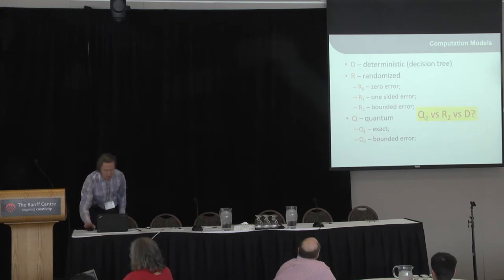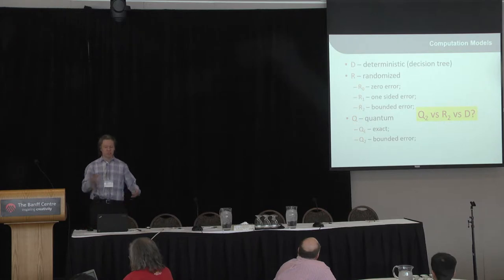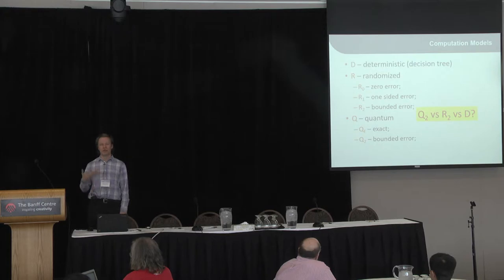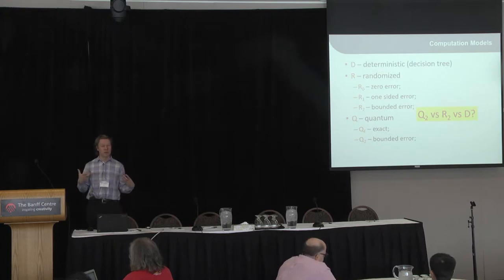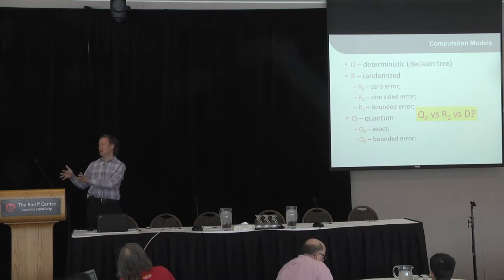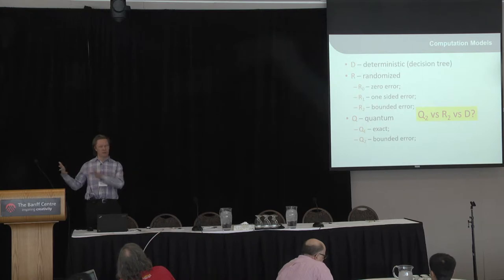The big question in this area is how do all of those quantities compare? Most importantly, the most general model of error is the bounded-error model. So how do bounded-error quantum algorithms compare with bounded-error classical algorithms? And how do both compare with deterministic algorithms?